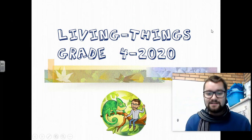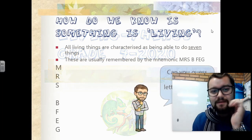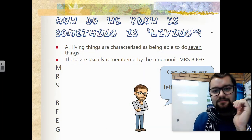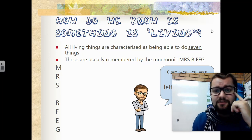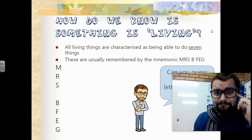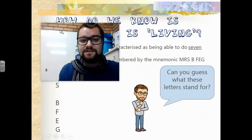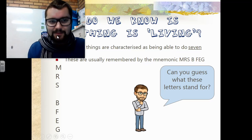As you can see, that is me at the bottom. We're going to be speaking about what would make something living and what would make something non-living. How do we know if something is living? All living things are characterized as being able to do seven things. These are usually remembered by the mnemonic Mrs. B Fig. Before we start to explain what each one is, I want you to try and guess what these letters stand for. I'm going to give you three seconds to try and guess what each one stands for.